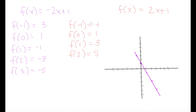Now let's do our second graph. When x is equal to negative 1, y is equal to negative 1, so that's a point over here. When x is equal to 0, y is equal to 1, so that's a point here as well. When x is equal to 1, y is equal to 3 — a point over here. And when x is equal to 2, y is equal to 5 — a point over here. So this graph is going to be a line that looks like this.